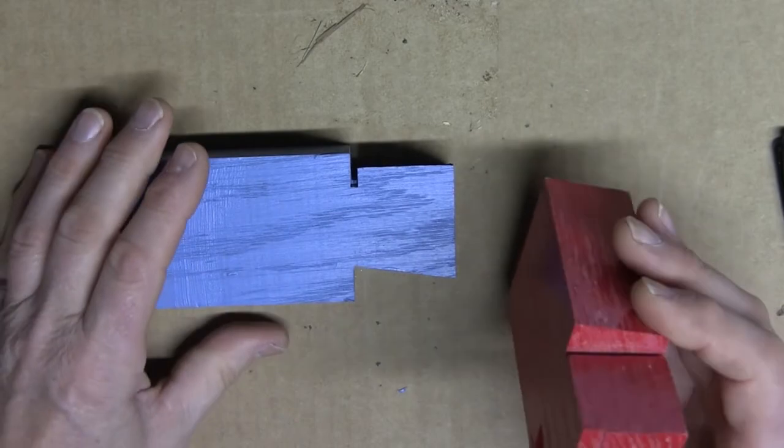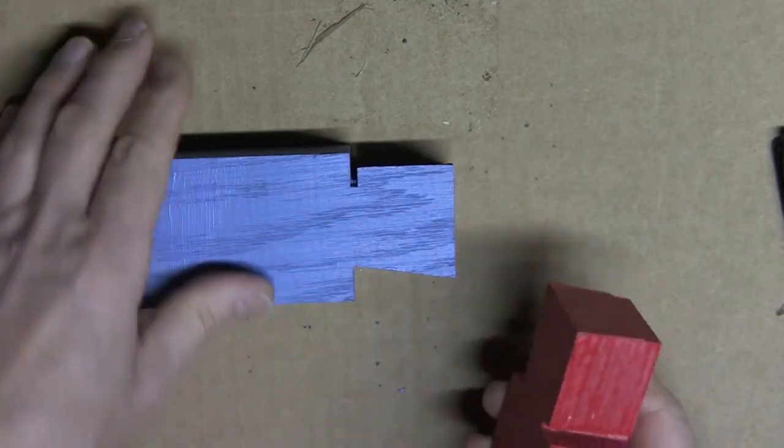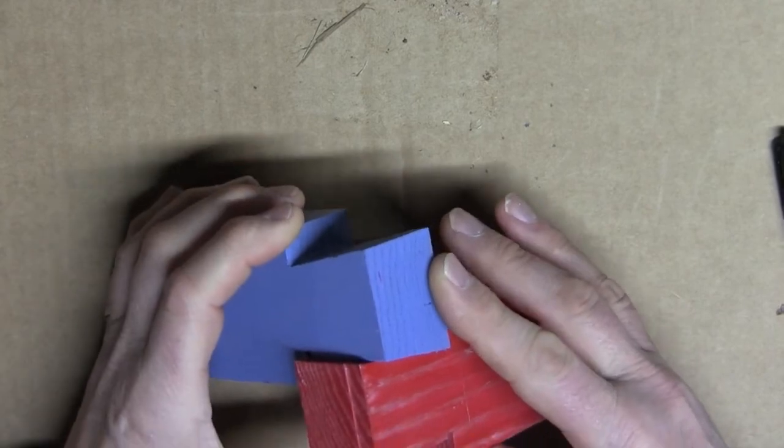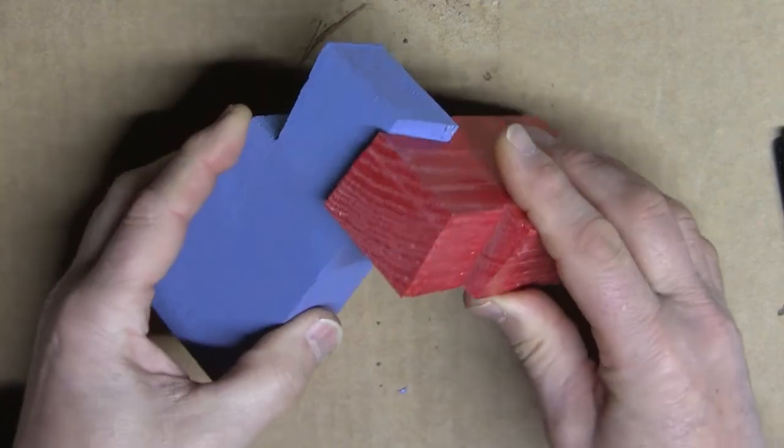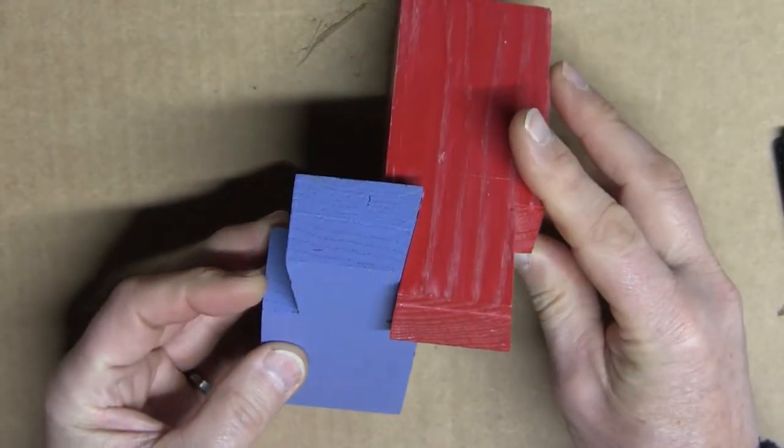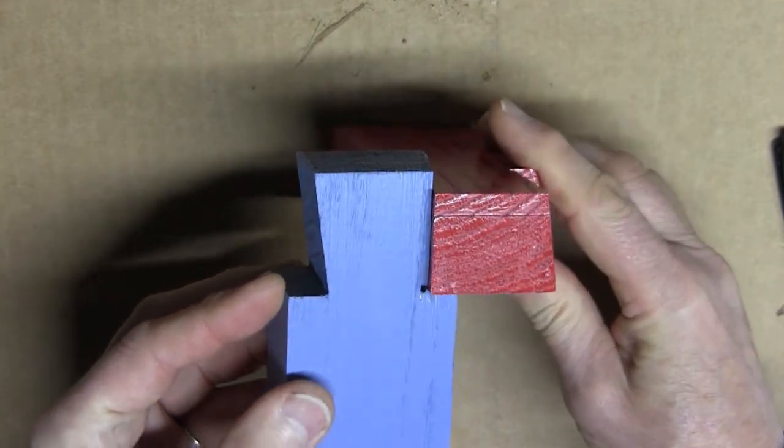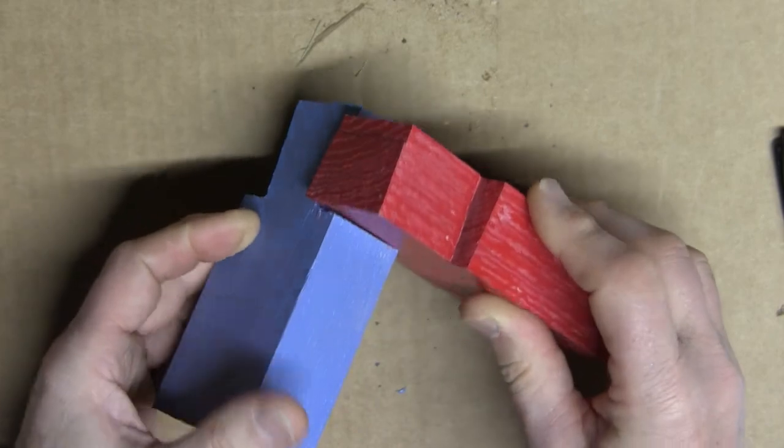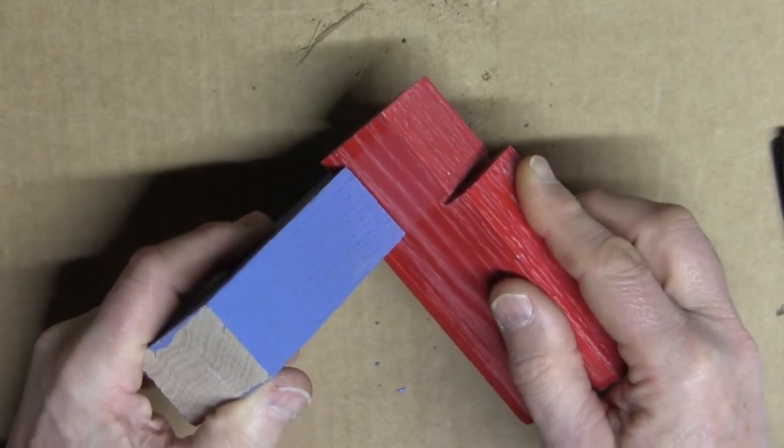Then when you put your logs together you're going to have a nice joint for your half dovetail. Fits nice and tight. And that's your half dovetail for your cabin.